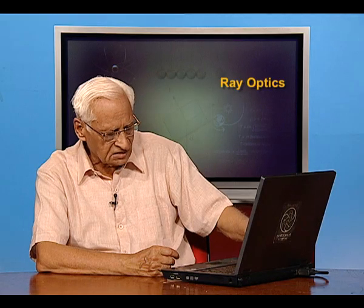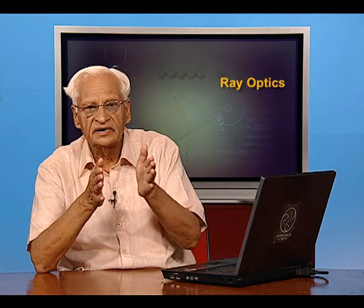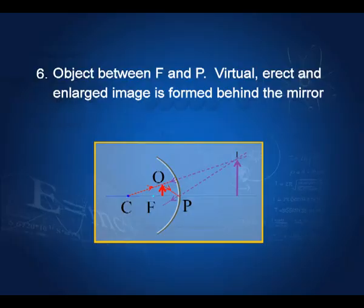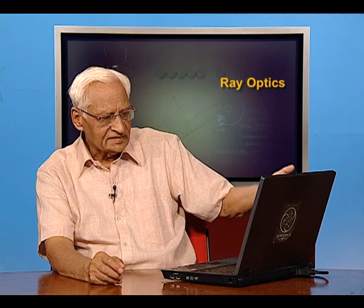If the object is at a distance smaller than the focal length — that is, between P and F — then the image is formed behind the mirror. It is enlarged, virtual, and erect.